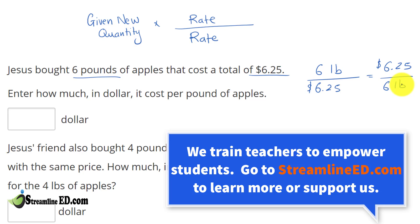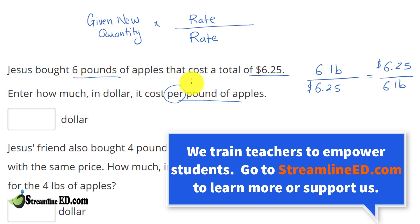Now, they want us to know how much in dollars it costs per pound. What does 'per' mean? Per is relative to 1. So all I have to do is this.